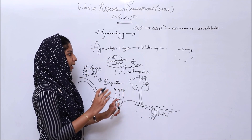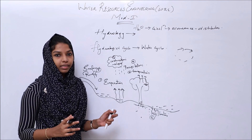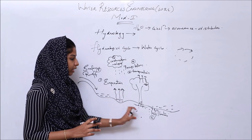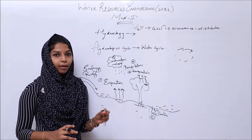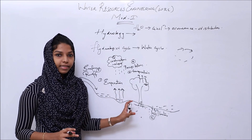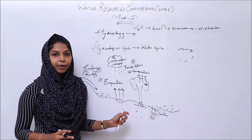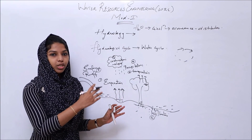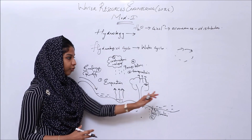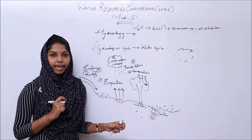This is how we explain the Hydrological Cycle. The first component is Evaporation, the second is Transpiration, the third is Condensation, the fourth is Precipitation, the fifth is Surface Runoff, and the sixth is Infiltration. That concludes our introduction to the Hydrological Cycle.